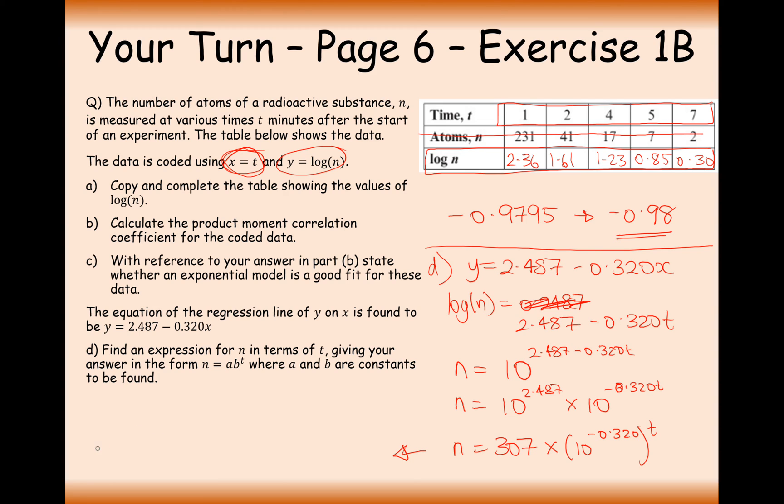So the answer therefore is going to be N equals 307 times 10 to the power of minus 0.320. I'll do this on my calculator now, which is going to be 0.48 to the power of T. Lovely. So what we could say here is that the number of radioactive substance N is decreasing at a rate of 52% each unit of time, after each minute.